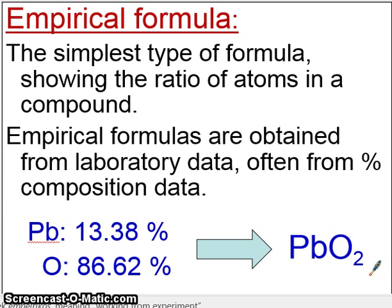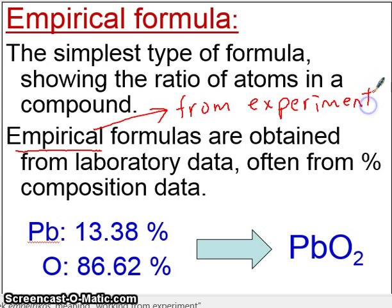The word empirical actually means determined from experimental data, so this word means from experiment. We will take numbers from experiment and then use those numbers to determine the empirical formula of the compound. Very often, this is taken from the percent composition data from lab.